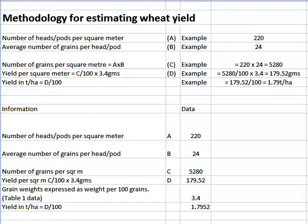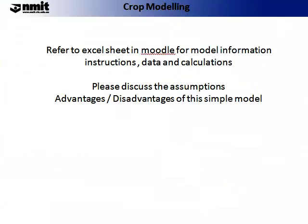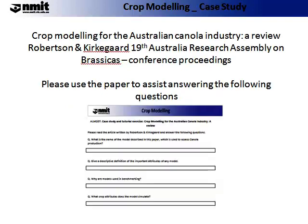The Excel sheet on Moodle gives you these calculations in the spreadsheet. Please have a think about the assumptions that this model is based on and make a note of these as part of your lecture notes. Also make a note of the advantages and disadvantages that this simple model may have in your agricultural enterprises. Please refer to Moodle or your handout for a list of questions on the paper on crop modelling for the Australian canola industry — a review.